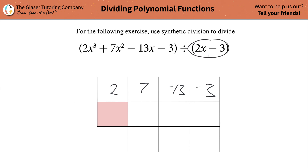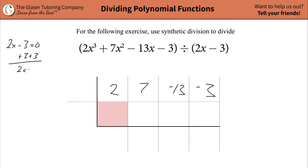Then what you're going to do is take your divisor and solve it for x — in other words, find the zero of this function. Add 3 to both sides, so 2x equals 3, then divide both sides by 2, and you find that x equals 3 over 2. This is the value you're going to plug in to the left side of the synthetic division table.